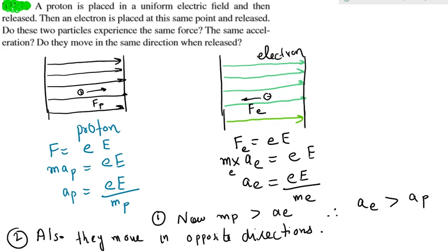Now the question is: compare the accelerations of the two charged particles. You can see the force experienced in a uniform electric field by the proton is eE, and therefore the acceleration of proton is eE upon mass of proton, using Newton's second law, force equals ma.